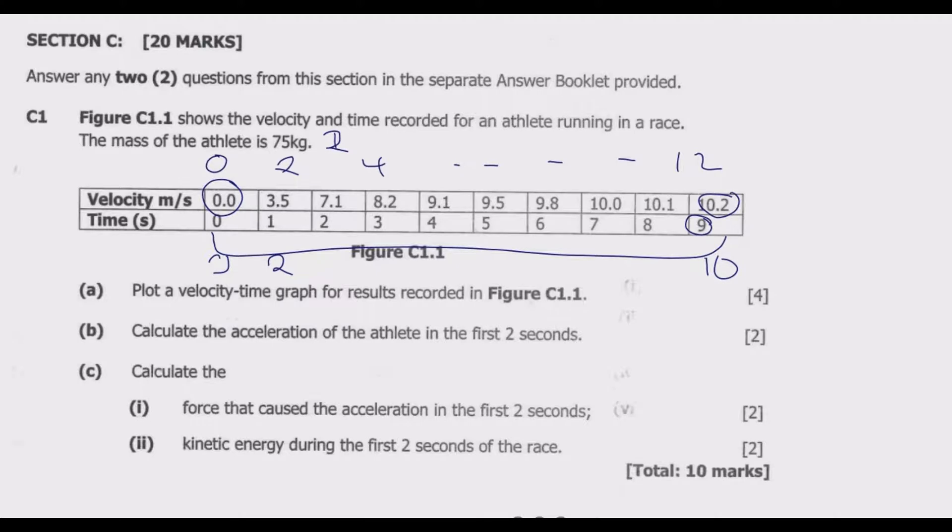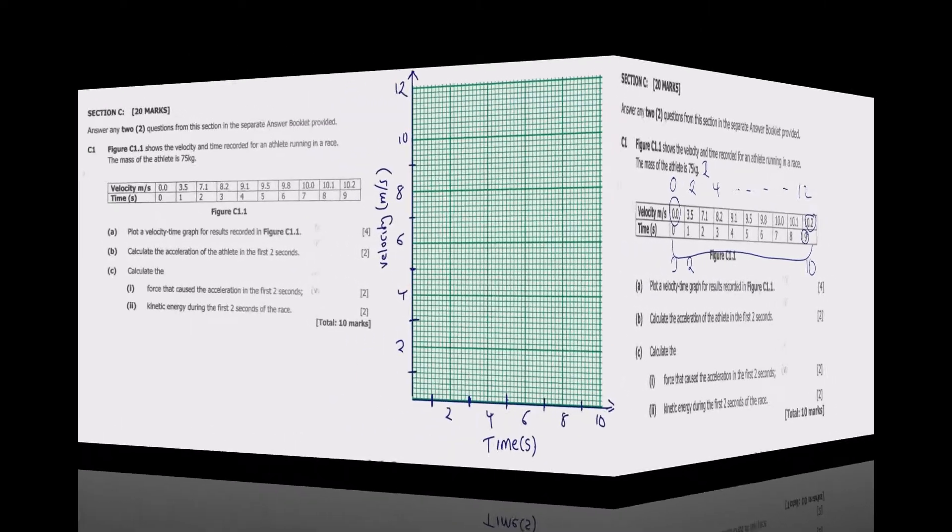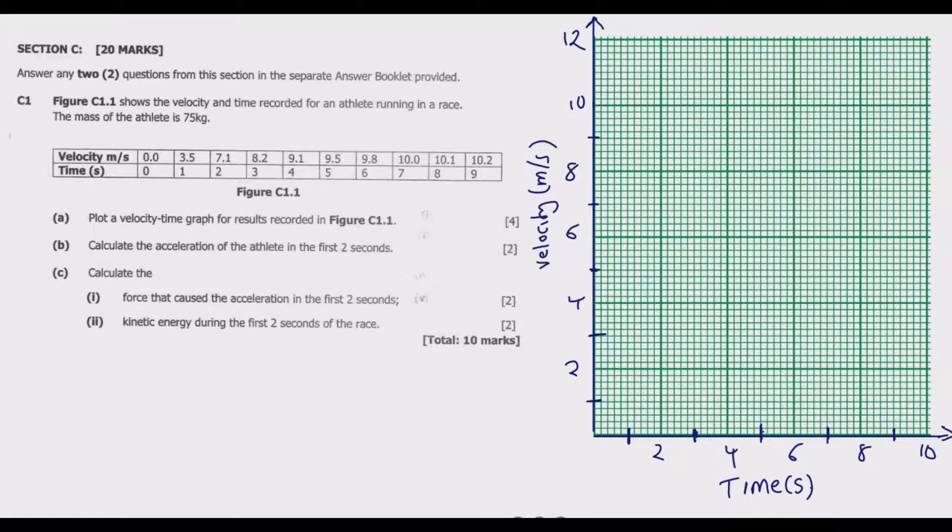Once you do that then you can start plotting this. Because the values are increasing in the same intervals it's easier to get this question correct, so make sure that the scales are the same. Let us move to a graph paper and plot this information correctly. We have a graph paper here that I've already labeled so that I don't waste much of your time. We have the time because it's a velocity time graph, so velocity is on the y axis then the second variable is on the x axis.